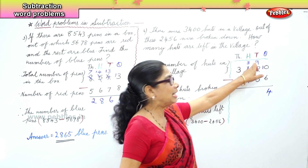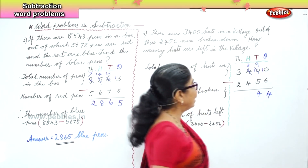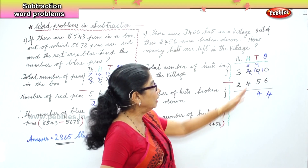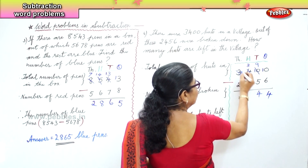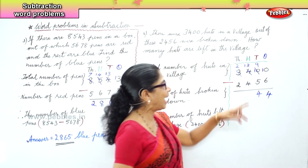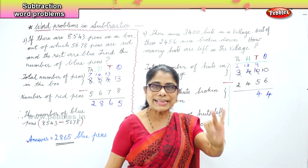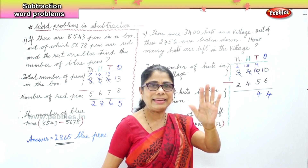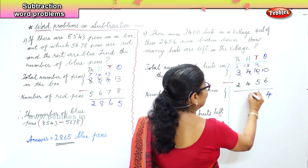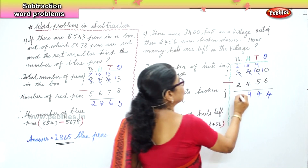In the hundreds place we have three take away four — four is bigger, so we borrow one from the thousands. Three thousands becomes two. We now have thirteen hundreds — take away four: five, six, seven, eight, nine, ten, eleven, twelve, thirteen — thirteen take away four is nine. In the thousands place: two take away two is zero.